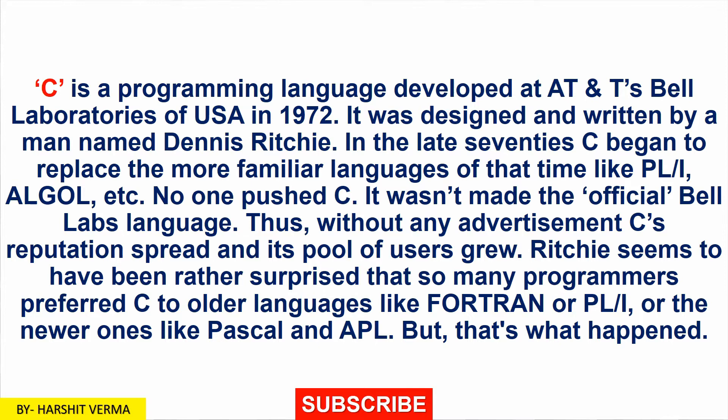What is C? C is a programming language developed at AT&T's Bell Laboratories of USA in 1972. It was designed and written by a man named Dennis Ritchie.